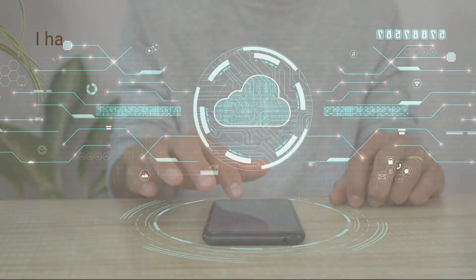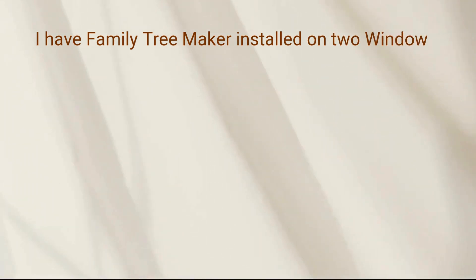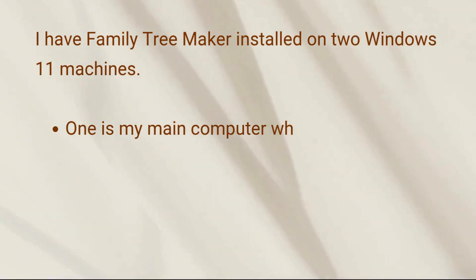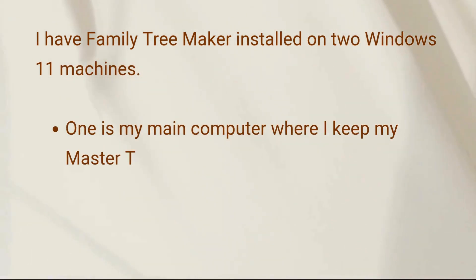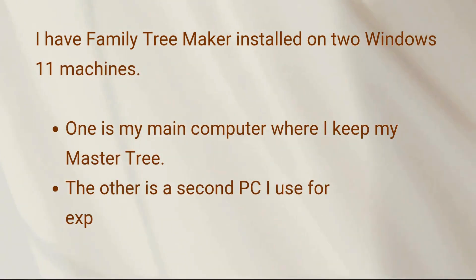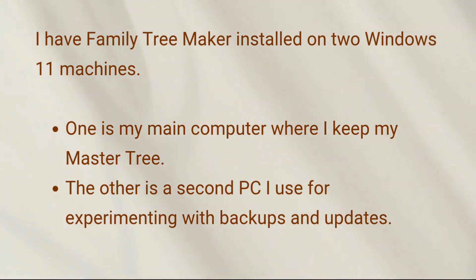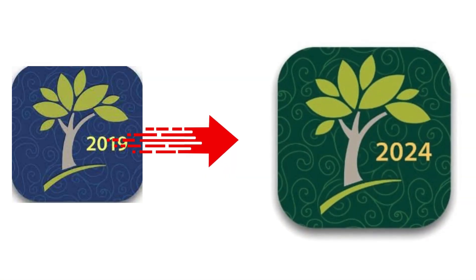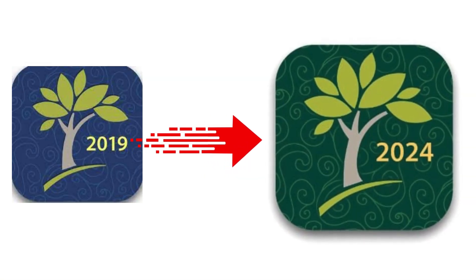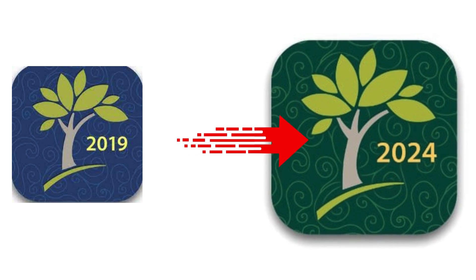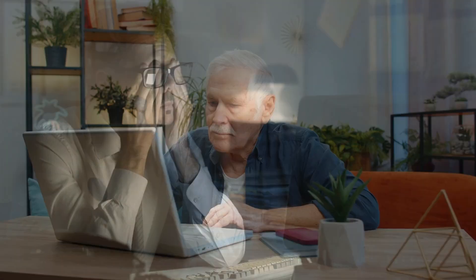Here's where things got interesting. I have Family Tree Maker installed on two Windows 11 machines — one is my main computer where I keep my master tree, the other is a second PC I use for experimenting with backups and updates. On both I was upgrading from FTM 2019 to 2024. But here's the twist: only the main computer had the freezing issue. The second computer opened the tree just fine every time — no freezing, no crashing.